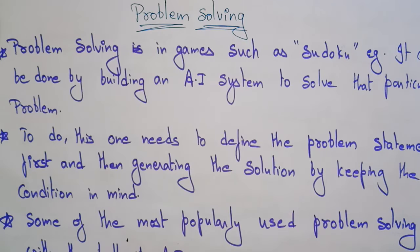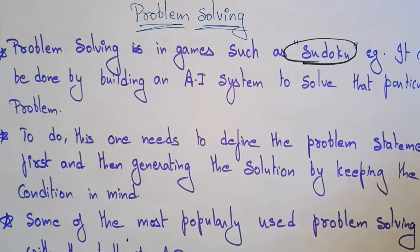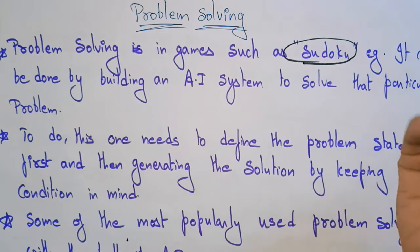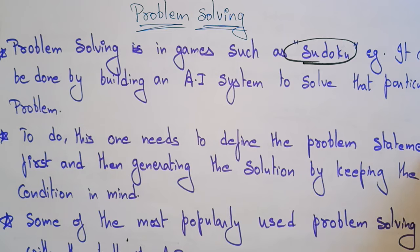Welcome back. The next topic is problem solving, which is one of the important concepts in artificial intelligence. Whatever we design using AI should involve problem solving. For example, consider Sudoku — most people have played it. An artificial intelligence system can be built to solve the Sudoku problem.